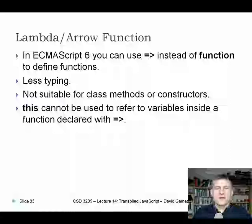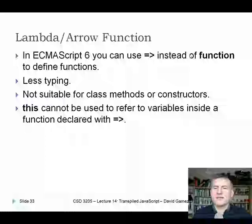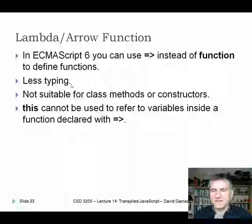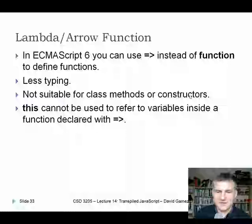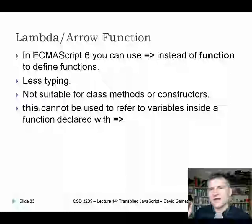Another feature used everywhere is the lambda arrow function. In ECMAScript, we can use the arrow syntax, sometimes called a lambda function, instead of the function keyword to define functions. With a single argument, we can just put the argument followed by the arrow and curly braces. We can even eliminate the curly braces if it's a single line of code. With two arguments, we put both in parentheses followed by the arrow and body. With no arguments, we use empty parentheses and the arrow.